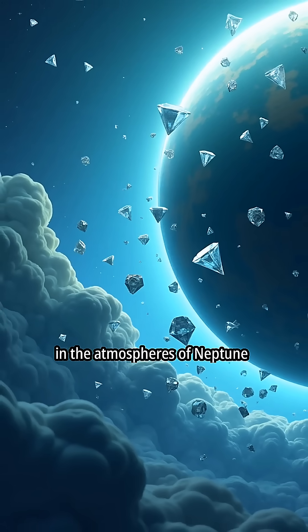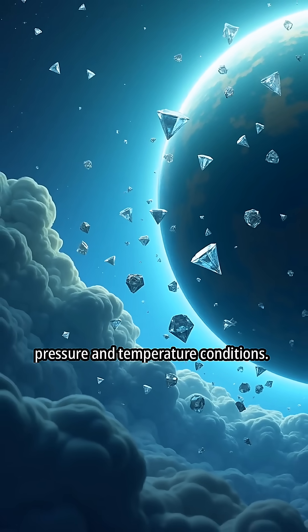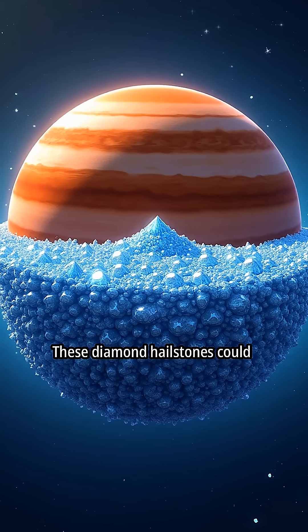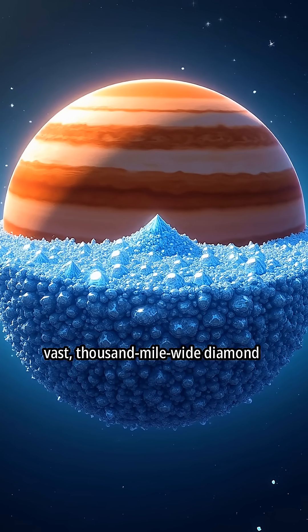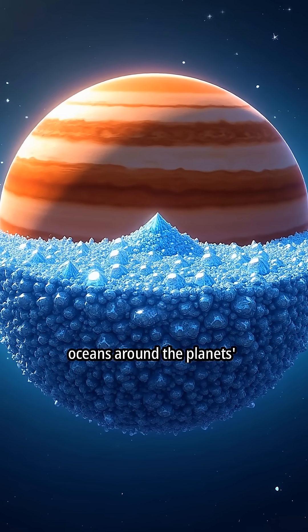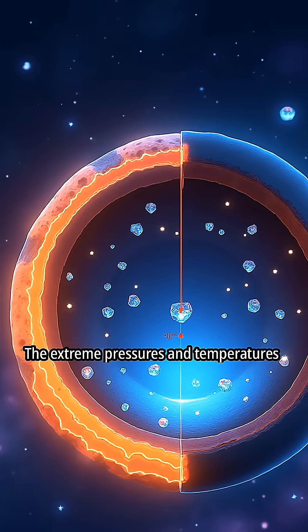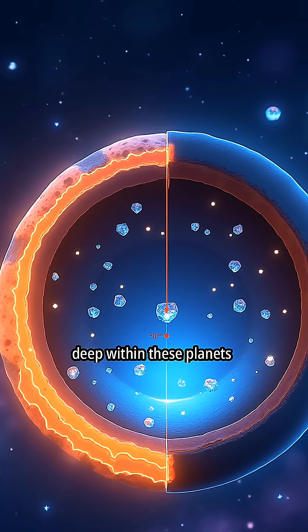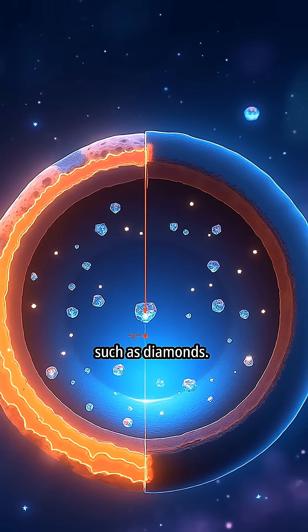Diamond hailstones may form in the atmospheres of Neptune and Uranus due to extreme pressure and temperature conditions. These diamond hailstones could potentially accumulate into vast, thousand-mile-wide diamond oceans around the planet's solid cores. The extreme pressures and temperatures deep within these planets facilitate the formation of stable carbon structures, such as diamonds.